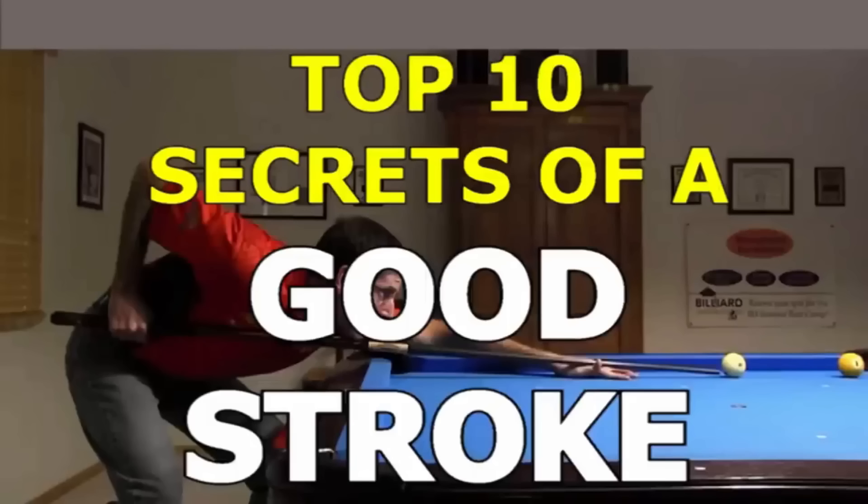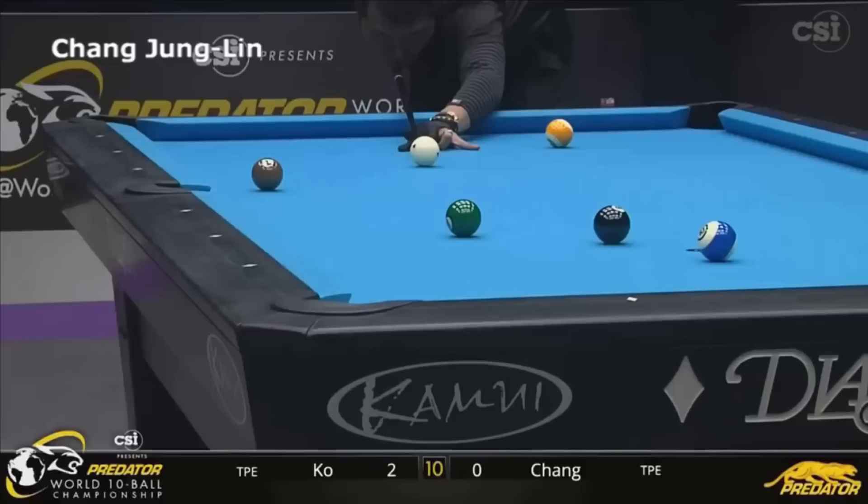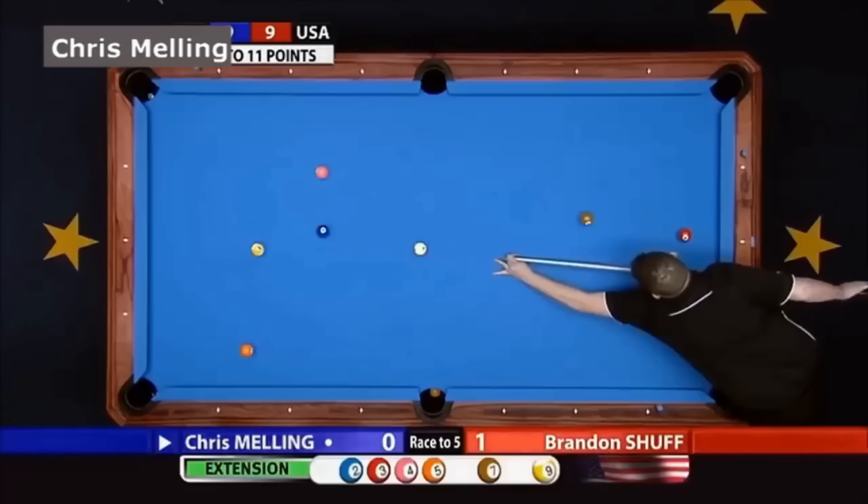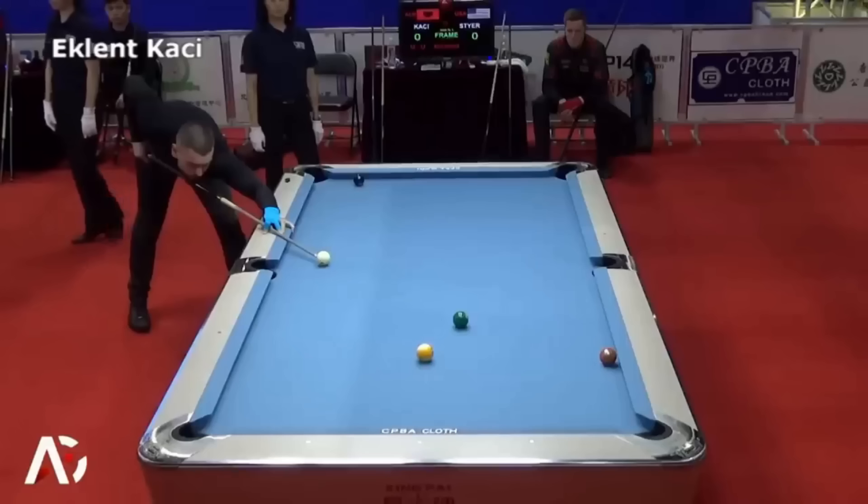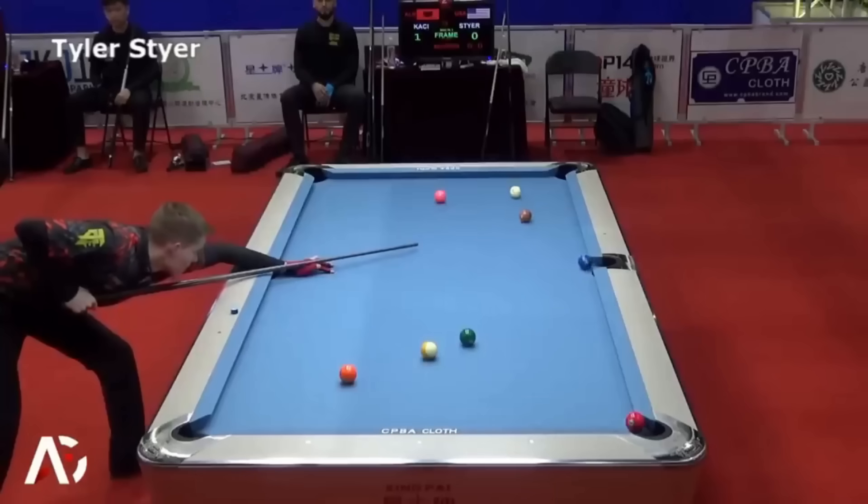In my Secrets of a Good Stroke video, I show examples of pro strokes exhibiting good timing. Again, stroke timing best practices include pulling the cue back slowly, not rushing the transition from the backstroke to the forward stroke, accelerating smoothly without slowing into the cue ball, all while staying relaxed and still.